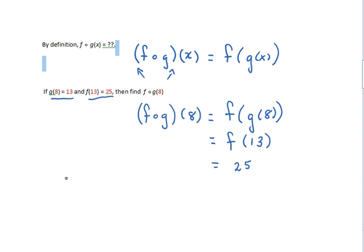Thus, when we start with 8, g took 8 to 13, and f takes 13 to 25. So the composition of f with g takes 8 to 25.